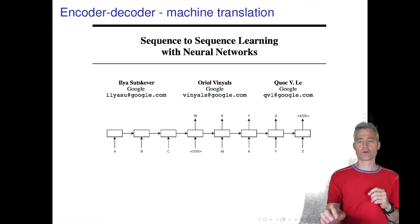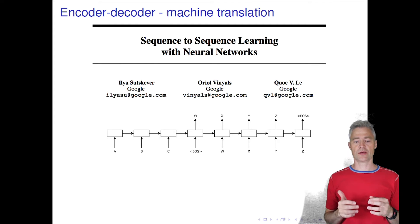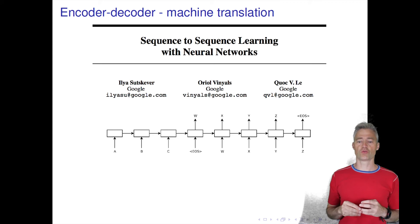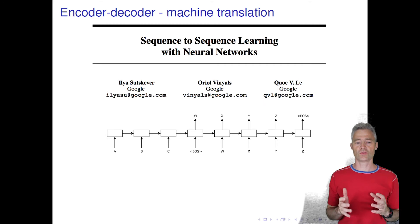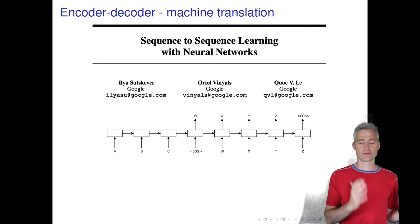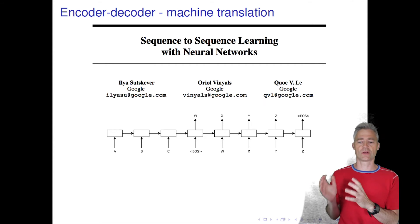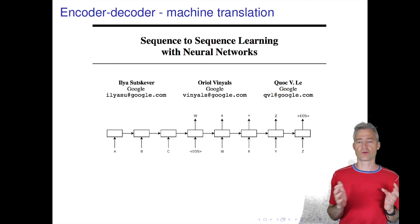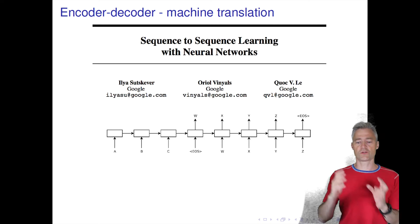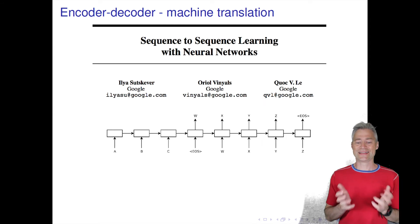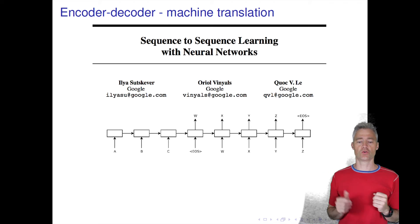I already talked about Deep Speech as a successful application of recurrent neural networks. A second very successful application is machine translation. To perform machine translation we take a sentence in, and as output of the model we get a sentence in a different language. We need to define a recurrent architecture that can do this, and the architecture that has emerged for this purpose is a so-called encoder-decoder architecture.